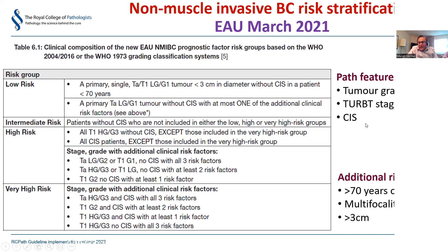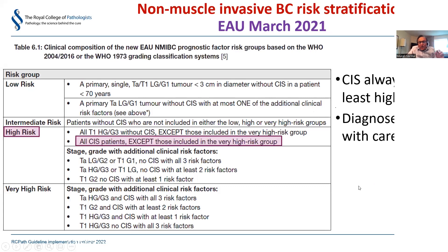Stratification is based on pathologic features like tumor grade, TURBT category, and presence or absence of CIS, but also on other risk factors such as the patient's age, number of tumors, and tumor size. CIS identification is absolutely critical - once a patient has CIS, irrespective of any other clinical factors, they are automatically in the high risk group and would be recommended BCG therapy with all its morbidity.